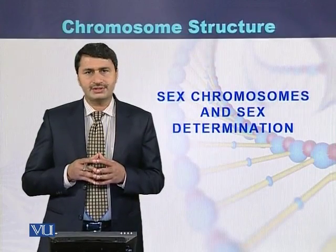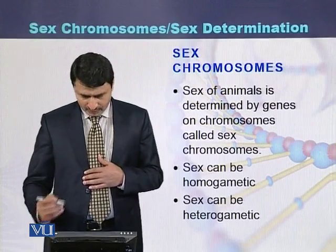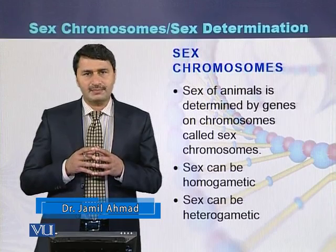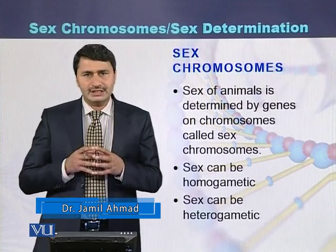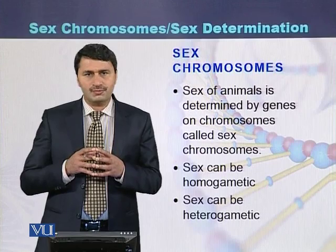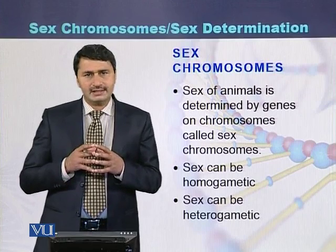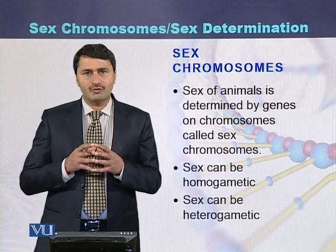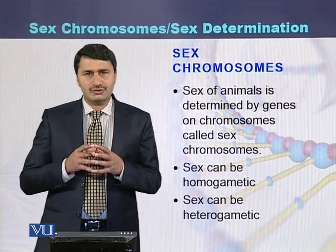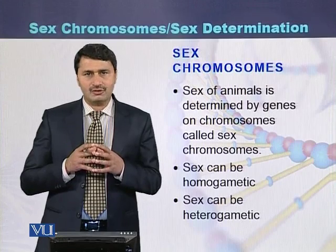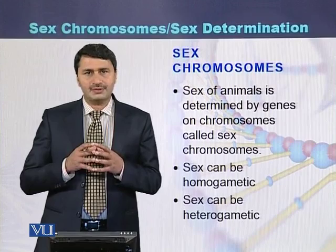Sex chromosomes and sex determination. The sex of animals is determined by genes present on chromosomes. The genes related to sex determination are present on specific chromosomes called sex chromosomes. Sex can be homogametic, producing only one type of gamete, or heterogametic, producing two types of gametes.